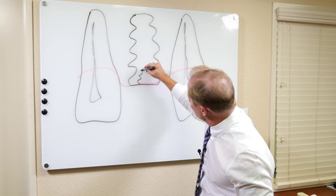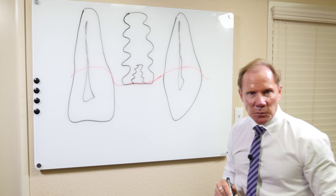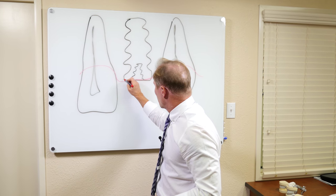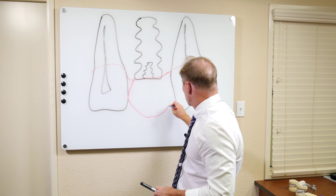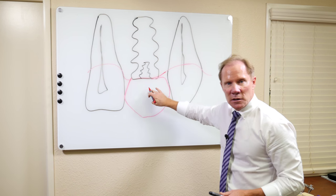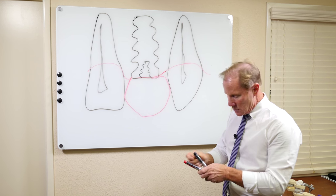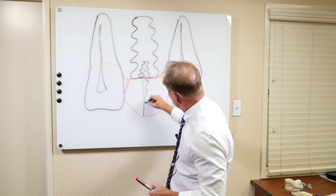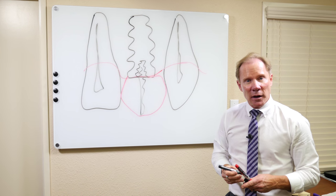So there's actually threads within the implant. The dentist then will design a crown to fit this space between the two artificial teeth and then they will screw it into that implant body.